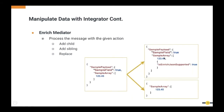The Enrich Mediator allows you to add a child or sibling element to an existing payload, or replace the current message with part of the message. For example, adding a child to a sample array in a JSON payload, or extracting a sub-part of the message as the new message. These kinds of transformations and many more can be achieved through the Enrich Mediator.